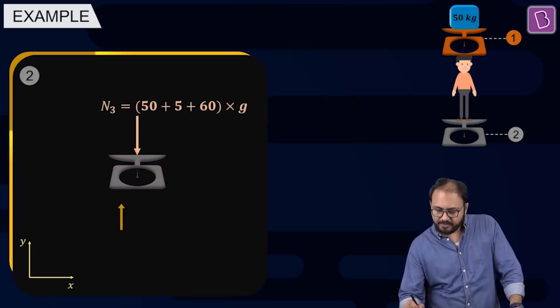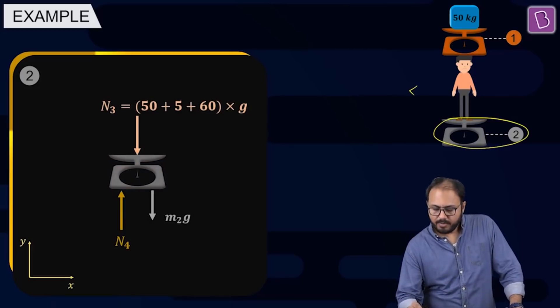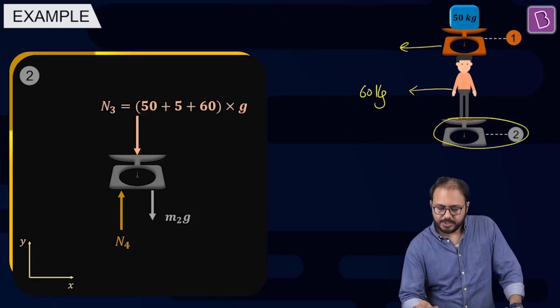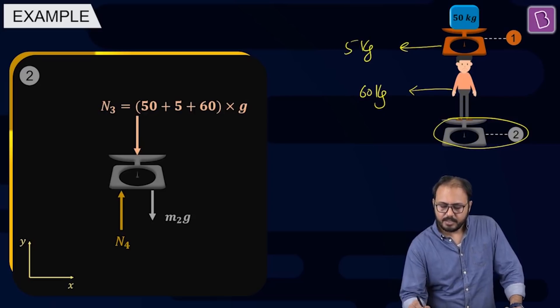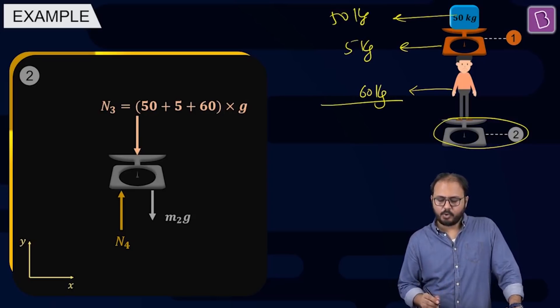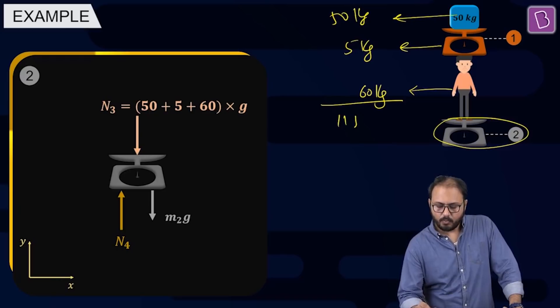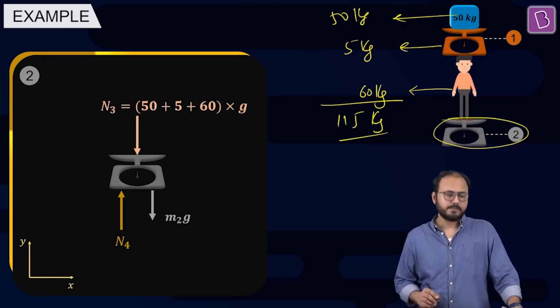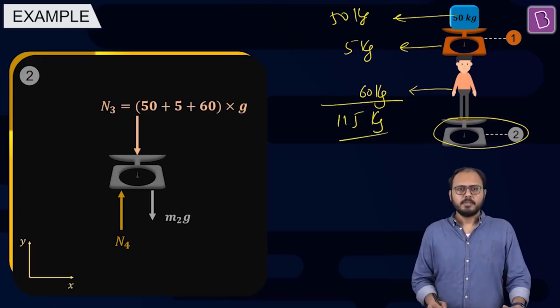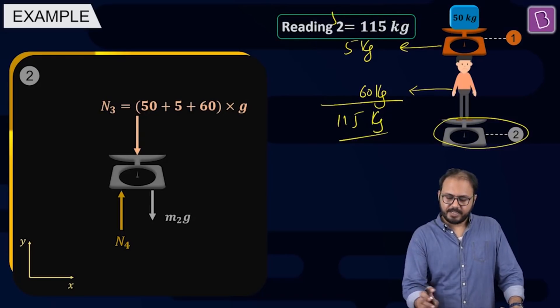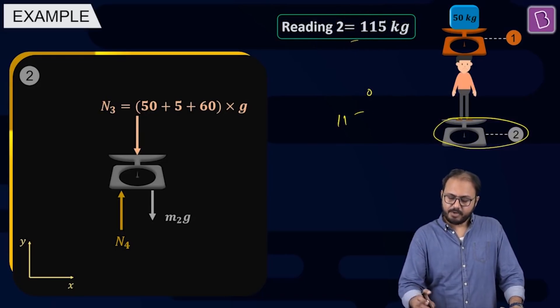Let's go to machine 2. Very, very, very simple. This is machine 2. If you remember, this guy is 60 KG. If you remember, this machine is 5 KG. And this weight is 50 KG. What is the total weight acting? 50 plus 5 plus 60. That is 115 KG. There you go. The reading is 115 KG. Or, 1150 N.